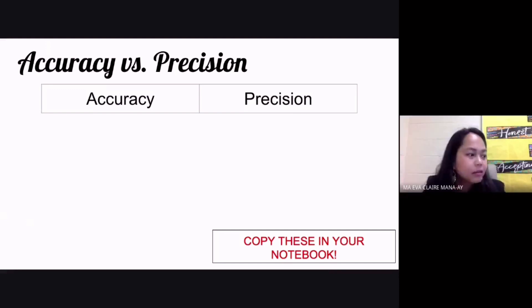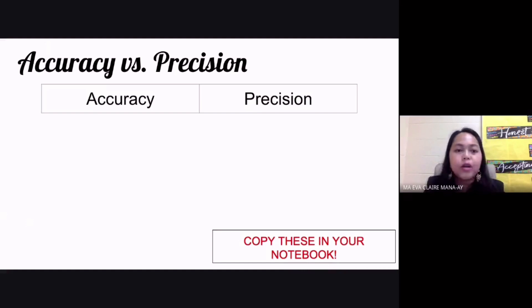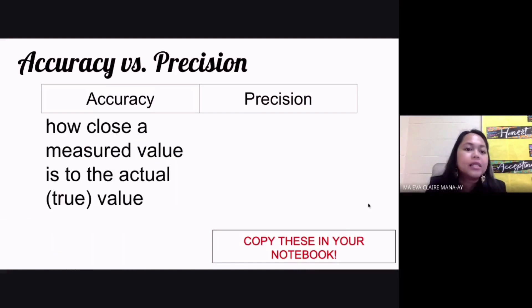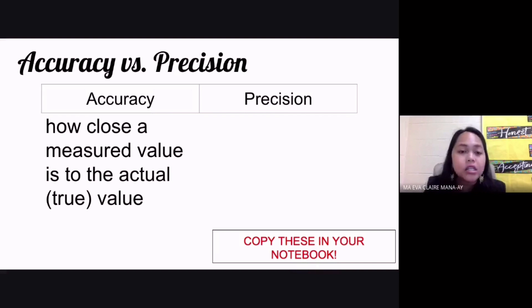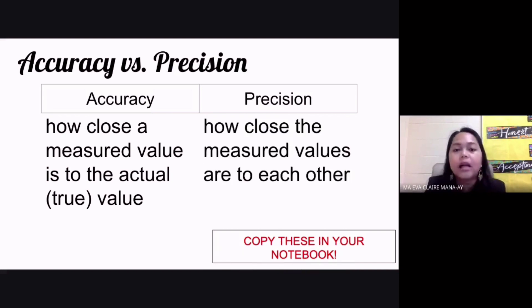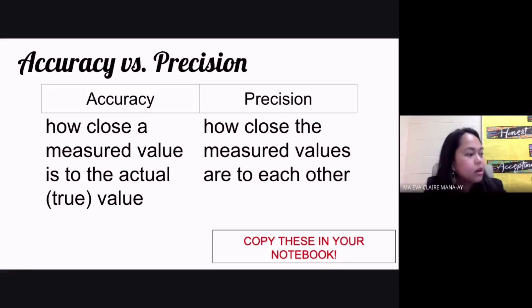Okay, that's correct, that's very good. So accuracy — as Reed said — is how close a measured value is to the actual or to the true value. And when you say precision, this is how close the measured values are to each other.